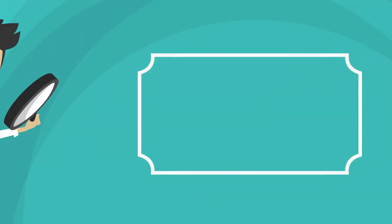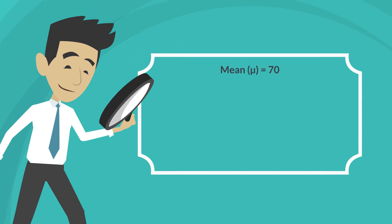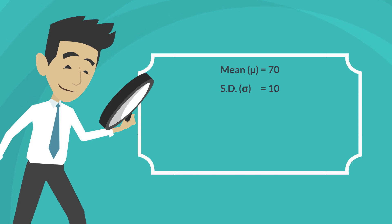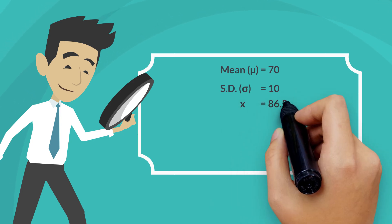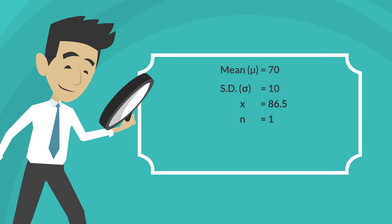Let's look at an example. Assume the average test score for exam 1 is 70 and the standard deviation is 10. Assume that student number 9 scored 86.5 on the exam. Note that we are only looking at one score of 86.5, and hence n equals 1 in this case.